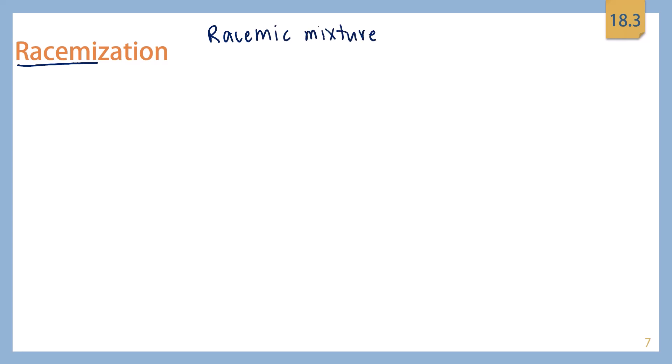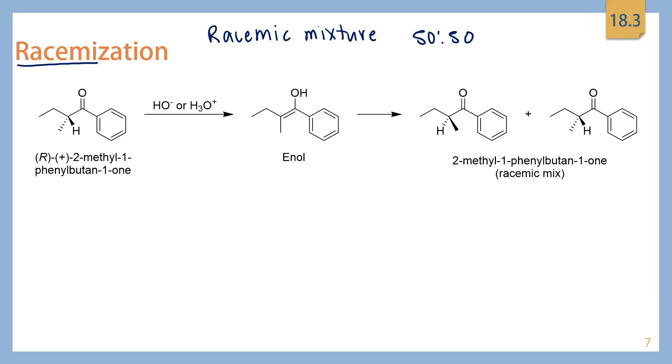Our first reaction is called racemization. You've seen the first part of this word before — we remember the concept of a racemic mixture. A racemic mixture is a mixture in which you have two enantiomers in a 50-50 ratio. Racemization is when you take one enantiomer of a compound and, going through the enol form, you create a racemic mixture.